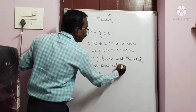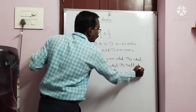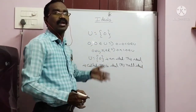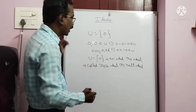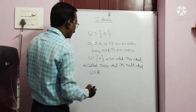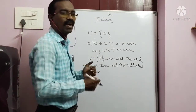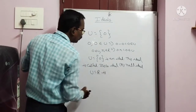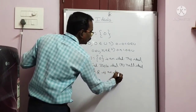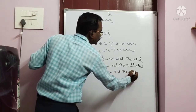The zero ideal is not a proper ideal. If you have the zero ideal, it is equal to R. So U equal to R is also an ideal. This ideal is called the unit ideal.